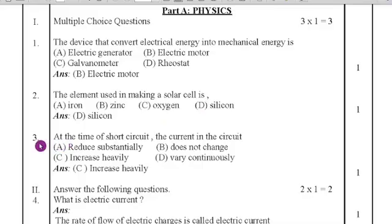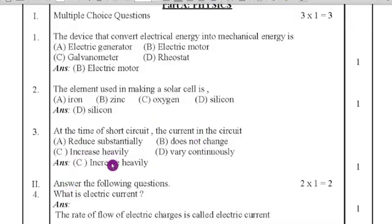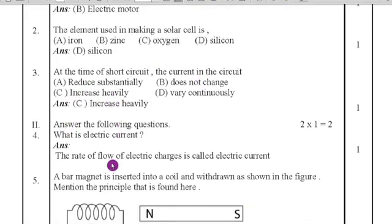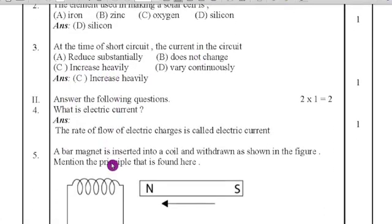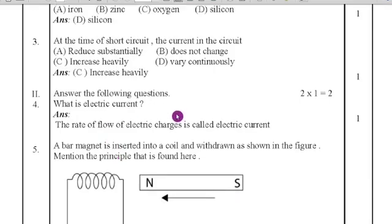Third question: at the time of short circuit, what happens to the current in the circuit? It increases heavily — there is an overflow of current. So option C, 'increases heavily,' is the right answer. Second main: answer the following questions. There are two questions, each carrying one mark.